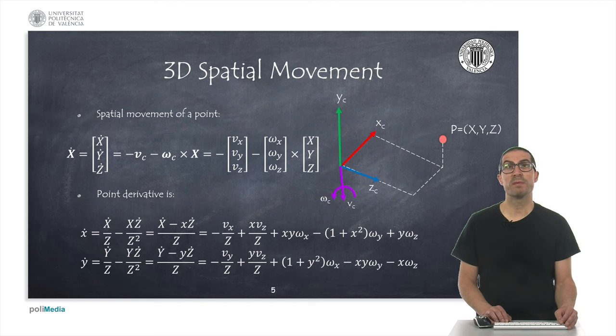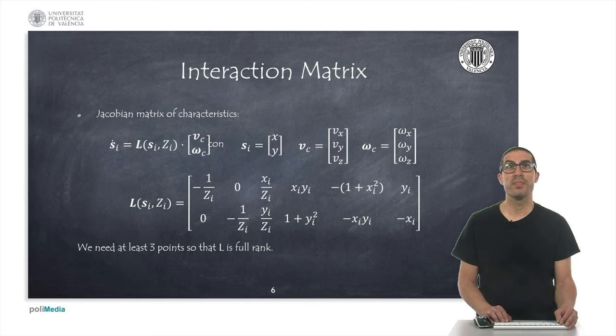Therefore, these speeds will be observed in the image as the derivatives of the homogeneous points as indicated here. As can be seen, they have a linear relationship with respect to the linear and angular velocities of the reference frame.